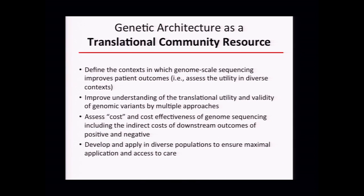Looping back to the concept of creating resources — which is very important as we think about large-scale programs — I divided this into two components. First, the translational/clinical community: if we achieve the previous goal, it will define the context in which genome-scale sequencing improves patient outcomes. Second, it will improve the understanding of the translational utility and validity of genomic variants by multiple approaches. If we do it right, we need to bring cost effectiveness and comparative effectiveness research into our realm — looking at the comparative effectiveness of genome sequencing, including the indirect costs of downstream outcomes, both positive and negative. Finally, we'll develop and apply this in diverse populations to ensure maximal application and access to care.